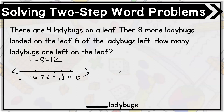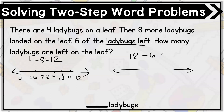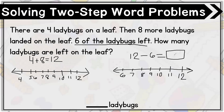Now I'll draw another open number line for the second part of the problem. We have 12 ladybugs on the leaf, and six of them left, so 12 take away six tells us how many ladybugs are left. This time I'm subtracting, so I go backwards. I put 12 at the end of my number line and take away six: 12, 11, 10, 9, 8, 7, 6. So 12 take away six is six — six ladybugs are left on the leaf.